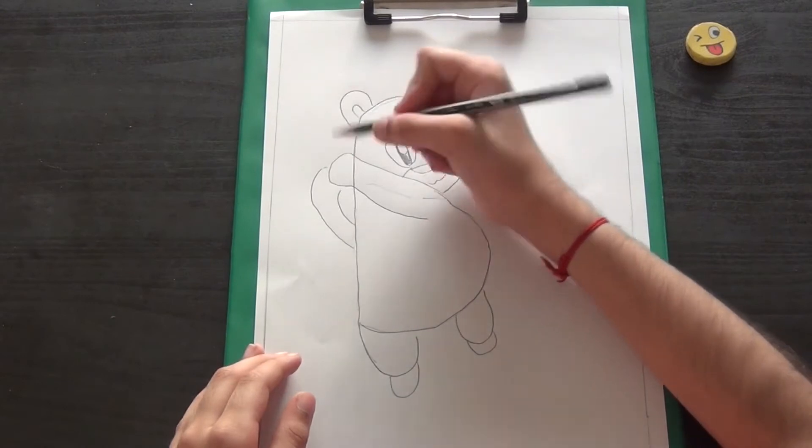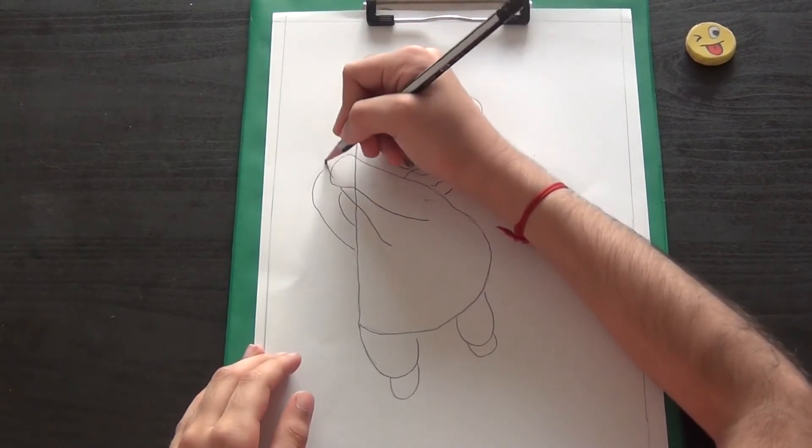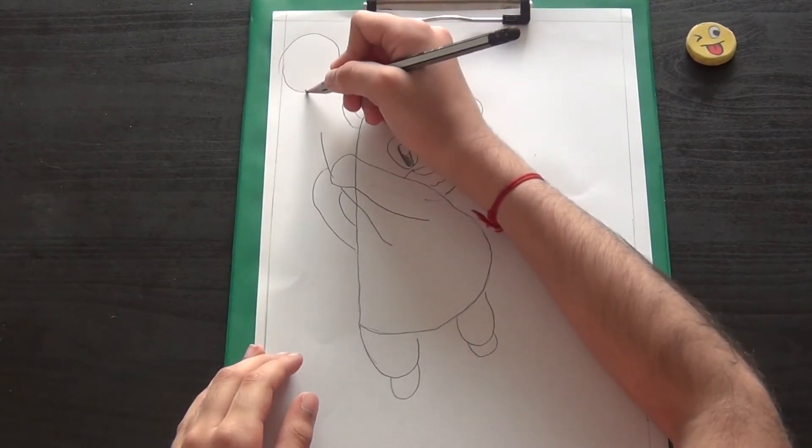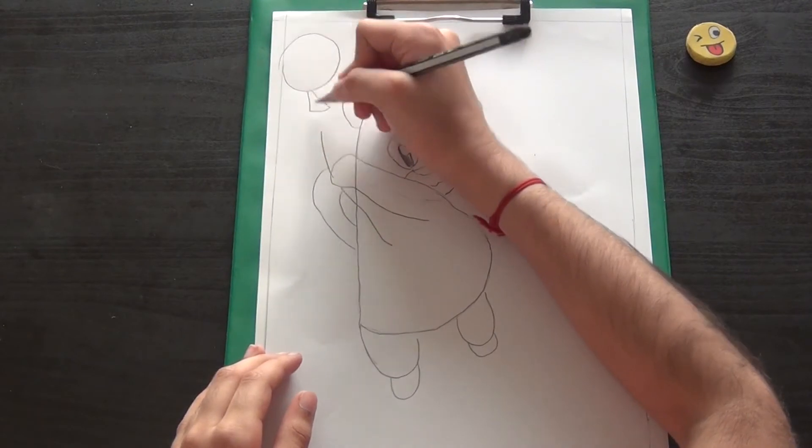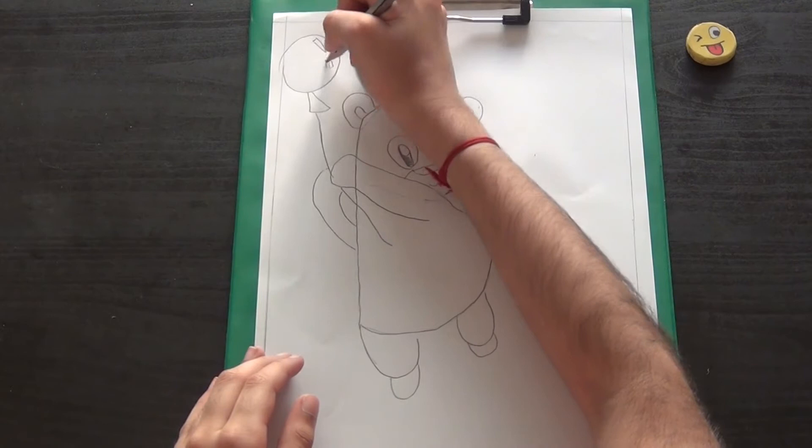Now let's start with the balloon part. Comes like this line, up, and then you can rub.